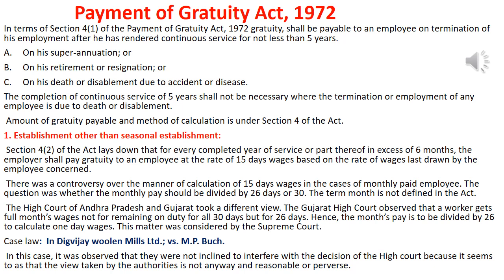Under Section 4, clause 2 of the Act, for every completed year of service or part thereof in excess of 6 months, the employer shall pay Gratuity to an employee at the rate of 15 days wages, based on the rate of wages last drawn by the employee concerned. So the Gratuity amount is calculated based on the last drawn wages.